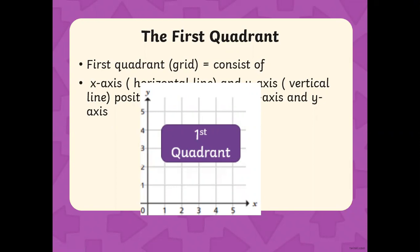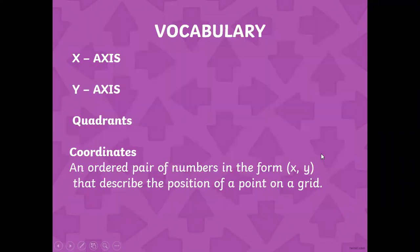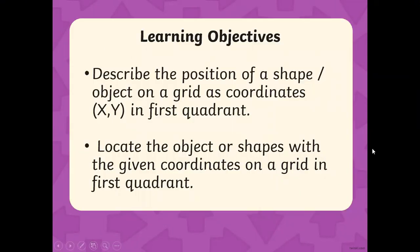Today we are going to focus only on the first quadrant, so I'm not going to discuss when any of them goes negative. Now we understand what the first quadrant is. Let's go back to our learning objectives: describe the position of a shape or object on a grid as coordinates (x, y) in the first quadrant, and locate the object or shape with given coordinates on a grid in the first quadrant. Now those difficult words should make more sense after the vocabulary we've just learned.